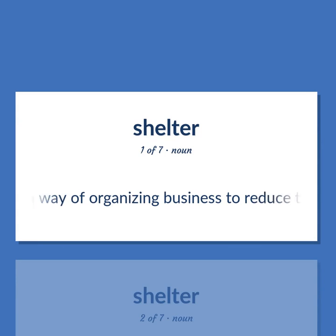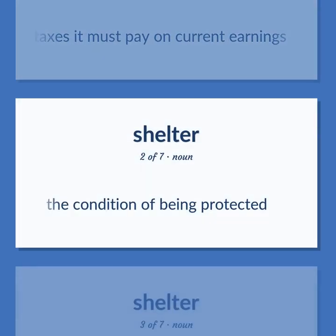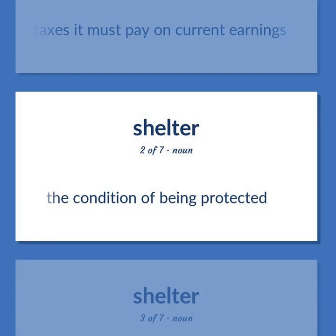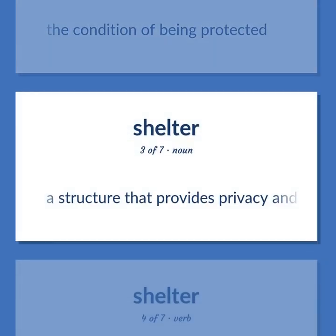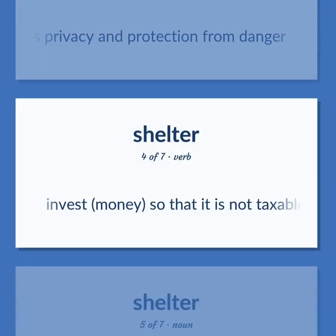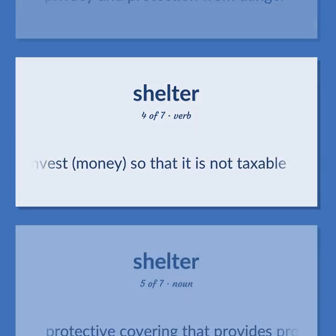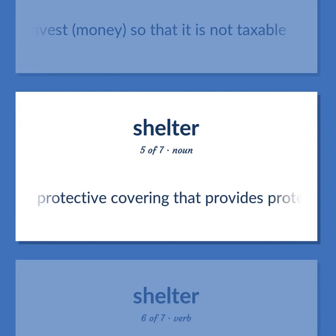A way of organizing business to reduce the taxes it must pay on current earnings. The condition of being protected. A structure that provides privacy and protection from danger. Invest money so that it is not taxable. Protective covering that provides protection from the weather.